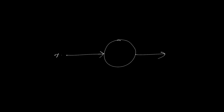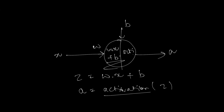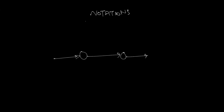We have an input x, an output a, a weight w associated with this input, and a bias b. To find the output a, we consider a variable z which equals the weight times the input plus the bias — that is, z = wx + b. The output a is then an activation function applied to z. This activation function basically decides whether the neuron should fire or not. So this neuron consists of two computations: one is to calculate z, and two is to compute the activation function.